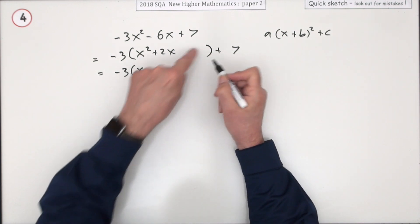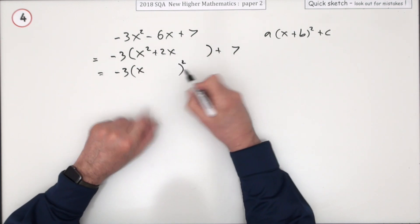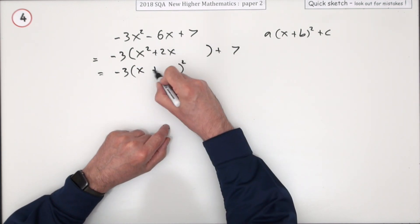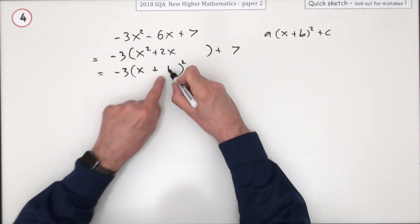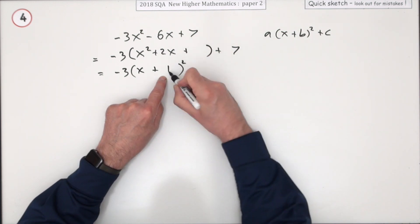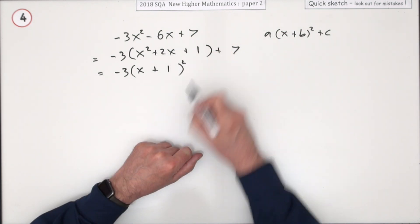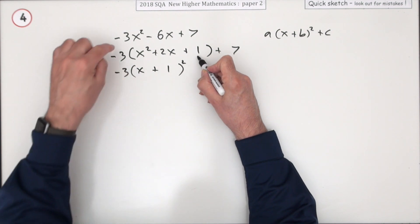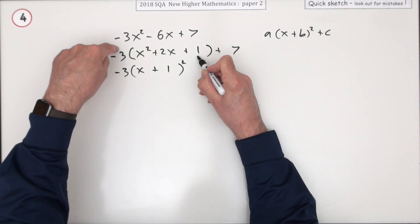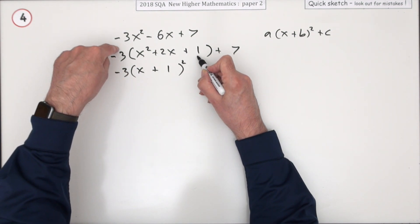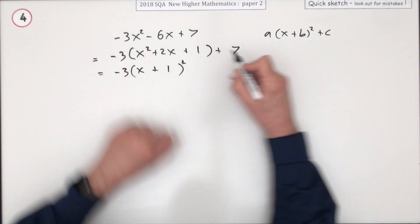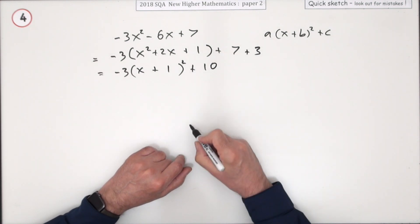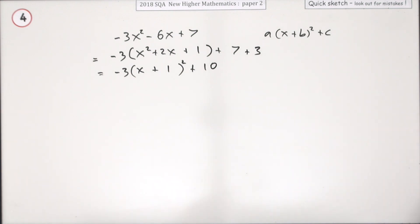Those are the first two terms in the expansion of this square. The first must have been x², the last I don't know yet — but twice the product gives this, so I halve that. Now I know it should be squared. That one wasn't there to begin with, so I've got negative three of them, meaning that negative three wasn't there, so I add three, which makes the answer plus 10. And that's it.